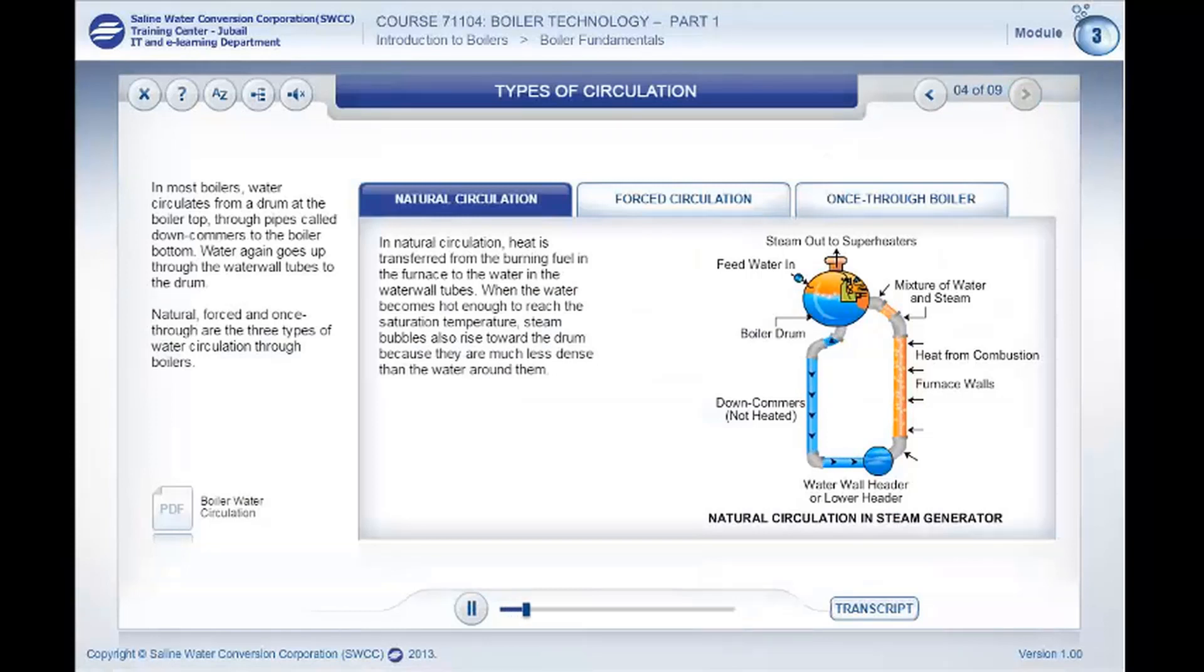In most boilers, water circulates from a drum at the boiler top, through pipes called downcomers, to the boiler bottom. Water again goes up through the water wall tubes to the drum.